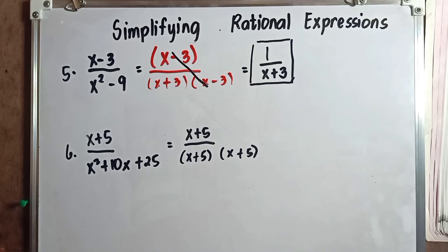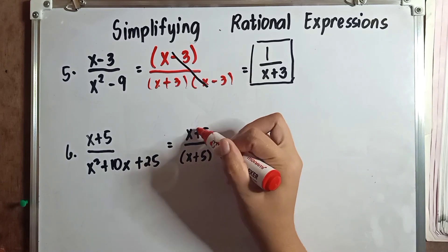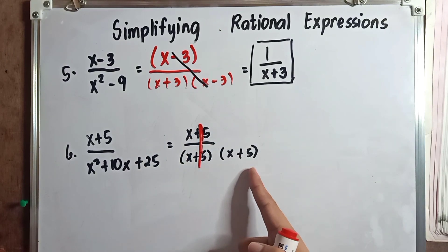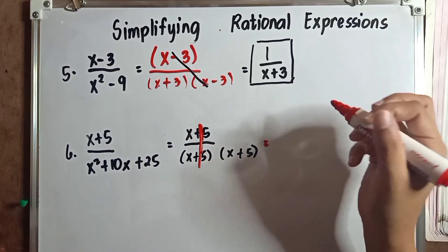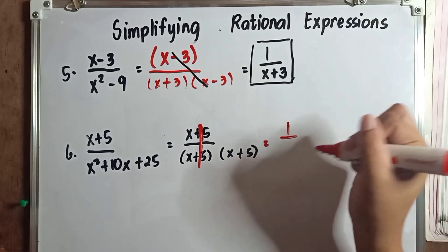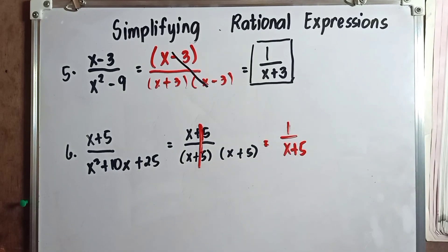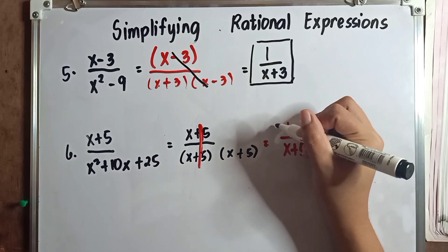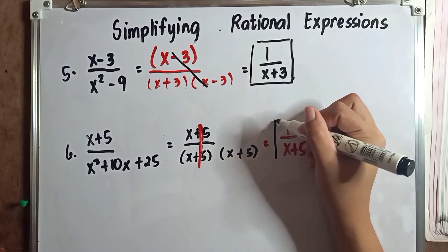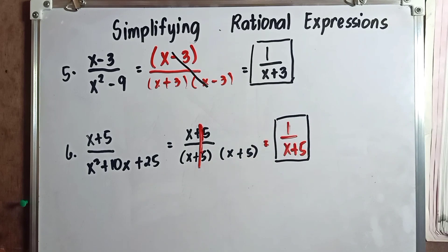After factoring, we cancel out the common factor. Since we have x plus 5 in the numerator and two factors of x plus 5 in the denominator, we cancel one x plus 5 with the other. What remains is x plus 5 in the denominator. Our final answer is 1 over x plus 5. When asked to simplify x plus 5 over x squared plus 10x plus 25, the answer is 1 over x plus 5.